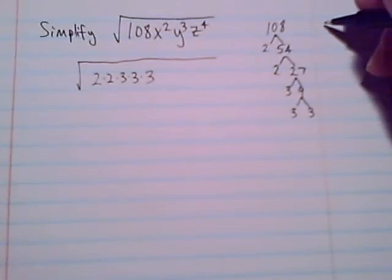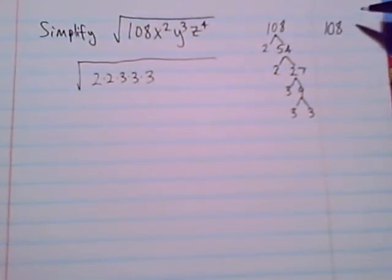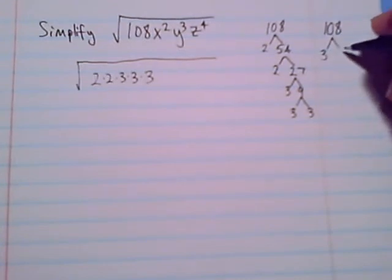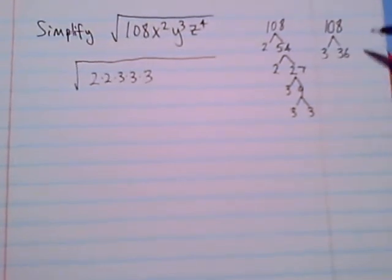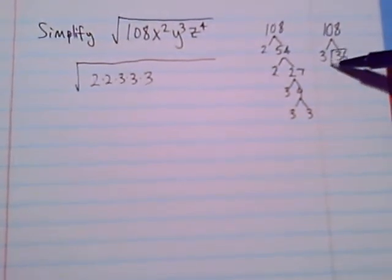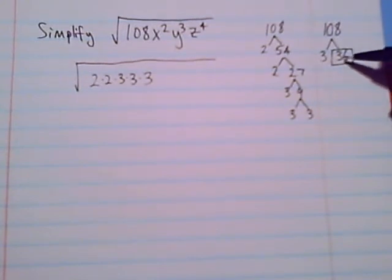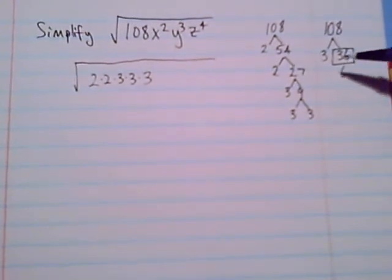The quickest way would be knowing some multiplication tables pretty well, enough to know that 108 is 3 times 36. And that's the best because it was the quickest way to find a square, and it was the largest perfect square that is a factor of 108, and that 36, square root of 36 would equal 6. We'll see that 6 show up later on in this problem.